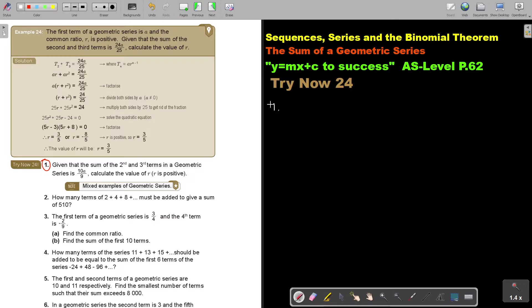Number 1. Given that the sum of the second and third term of a geometric series is this. It's almost the same. Given that the sum of the second and the third term, it's the second plus the third term. But now it's just 10A over 9.